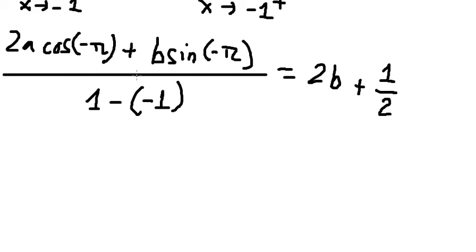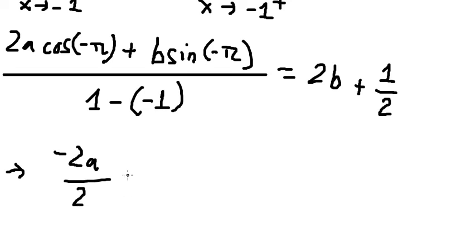Now we need to simplify. Cosine of negative b gives negative one, so negative two times a times cosine of negative b gives zero. One minus negative one gives positive two. And then we have b plus one over two.